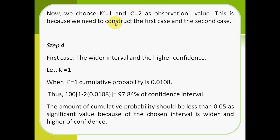Step 4, first case: the wider interval and the larger confidence, where k' equals 1. When k' equals 1, the cumulative probability is 0.0108. Using this formula, our confidence interval is 97.84%, which is the wider interval. The cumulative probability should be less than 0.05 as the significance value because the chosen interval is wider and has higher confidence.